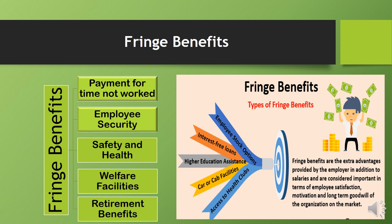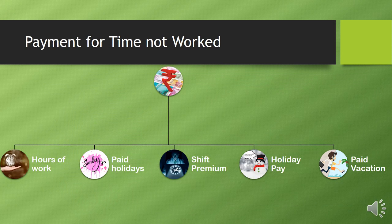The first category is payment for time not worked. The first sub-category is hours of work. According to the Factories Act 1948, Section 51 specifies that no adult worker shall be required to work in a factory for more than 48 hours in a week. Section 54 of the act restricts working hours to 9 hours in any day, and accordingly the total of 48 hours per week is calculated. So generally 8 hours are the fixed working hours.